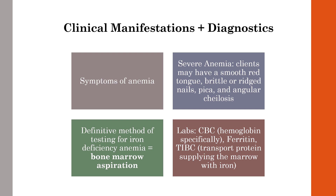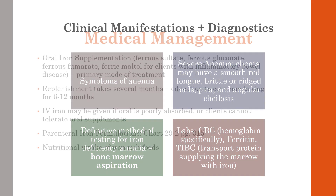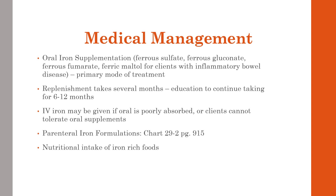Lab values to look at include a complete blood count — specifically hemoglobin, ferritin, and TIBC (total iron binding capacity, the transport protein supplying the marrow with iron). Mean corpuscular volume will be low relative to the hemoglobin level, meaning the person is producing very small and fewer red blood cells than necessary.